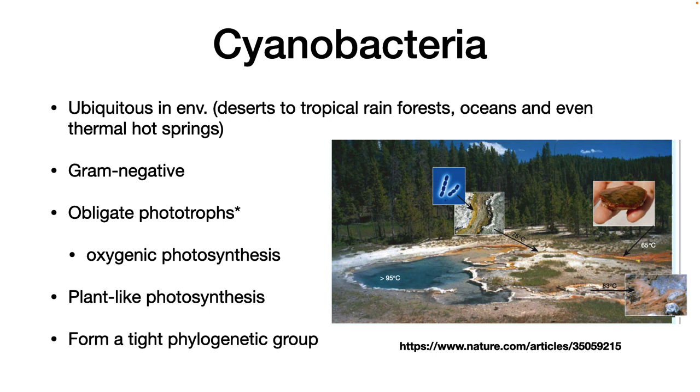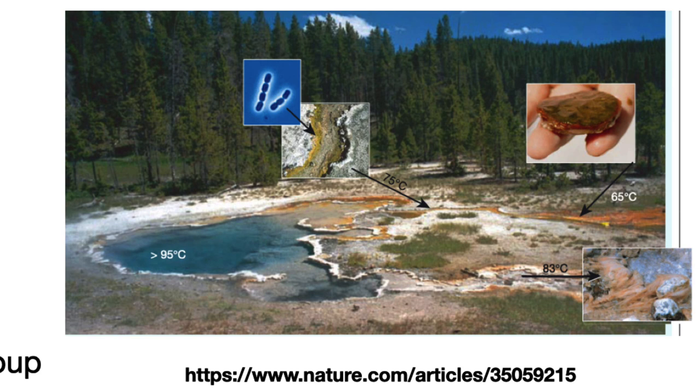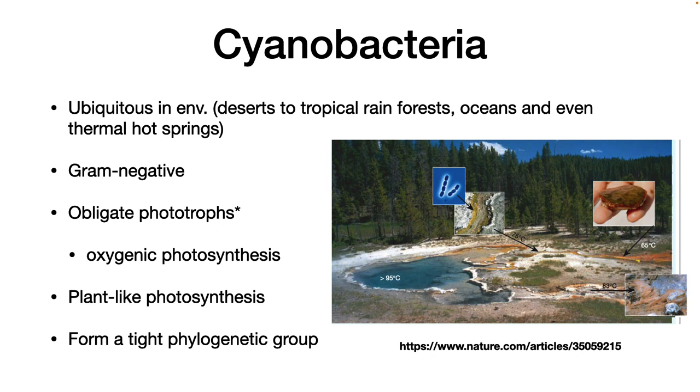We now cover our last group of photosynthetic bacteria, the cyanobacteria. They are ubiquitous in the environment. Deserts, tropical rainforests, lakes, oceans, and even thermal hot springs will have these organisms. The picture on the slide is Octopus Spring at Yellowstone. If you sample the waters at 75 degrees, you will find thermophilic cyanobacteria, a Synechococcus species, growing just fine. I find that amazing. Cyanobacteria are one of the most successful species on earth. They are obligate phototrophs and perform plant-like, oxygenic photosynthesis. Although, laboratory experiments have shown slow growth as photoheterotrophs in some strains. Cyanobacteria form a tight phylogenetic group.